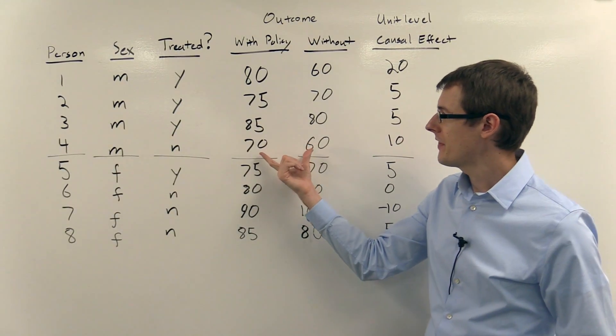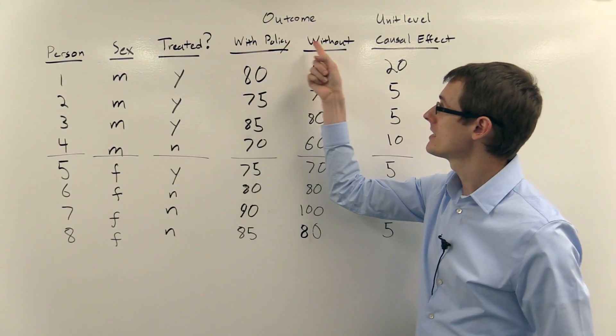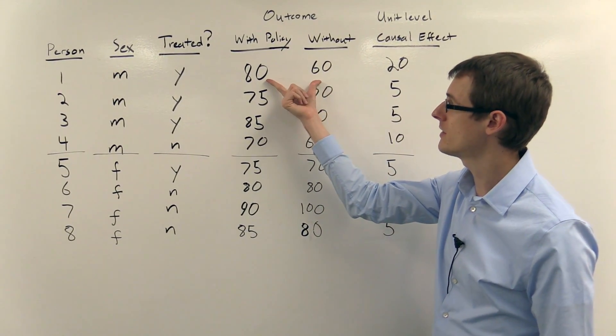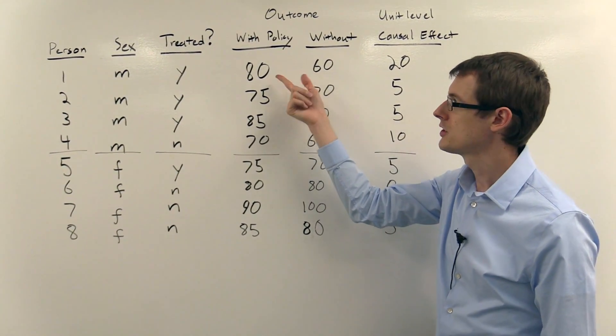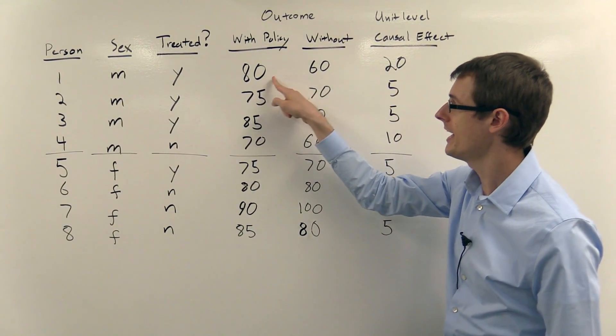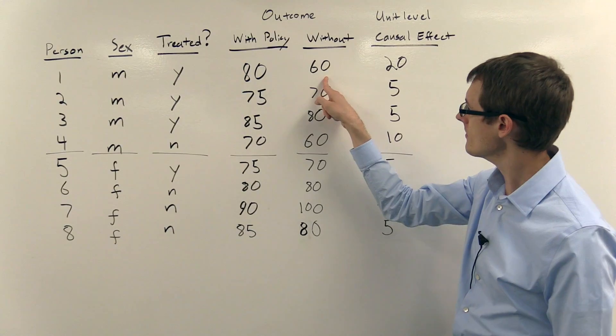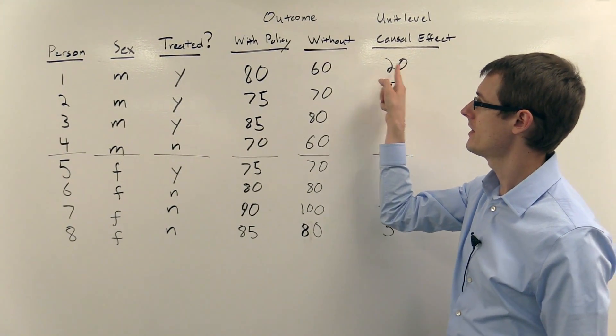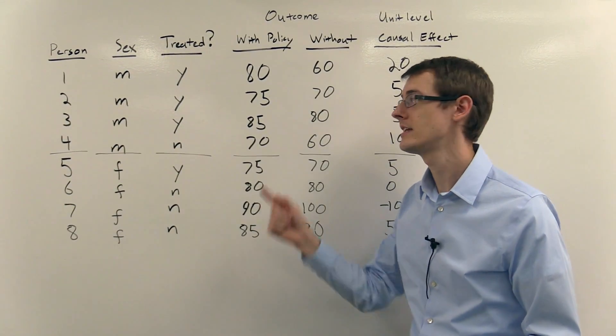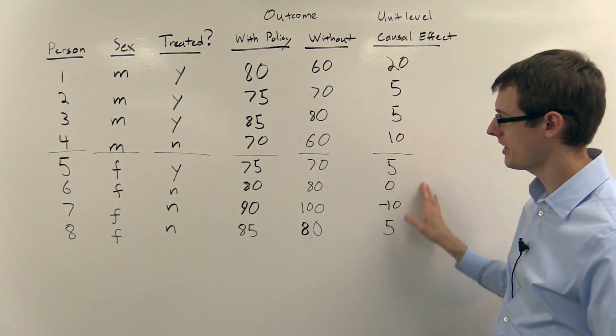Now once I've got these outcomes that you would get with the policy and without, I can compute the unit level causal effect, which is just the difference in these two numbers. So for the first person, the unit level causal effect is 20, 80 minus 60. This is the effect that the person would get if they went into the policy, a 20 point increase in their outcome, and similarly for everybody else.